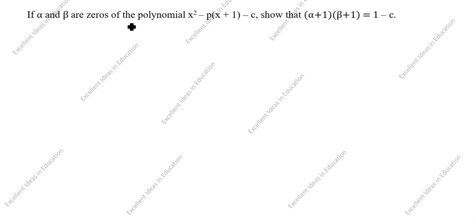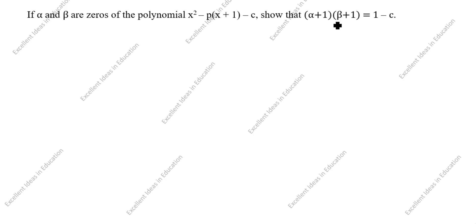If alpha and beta are zeros of the polynomial x squared minus p times (x plus 1) minus c, show that (alpha plus 1)(beta plus 1) equals 1 minus c.